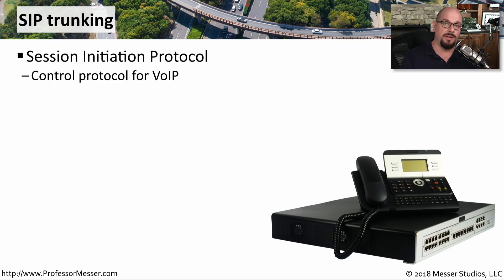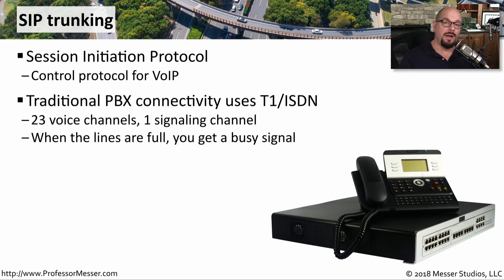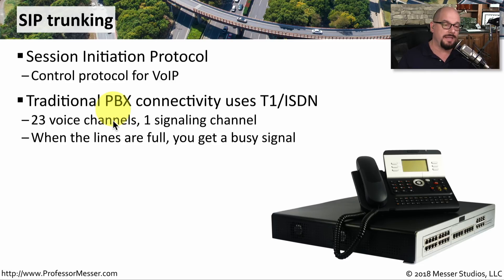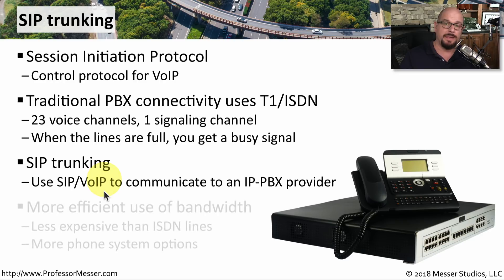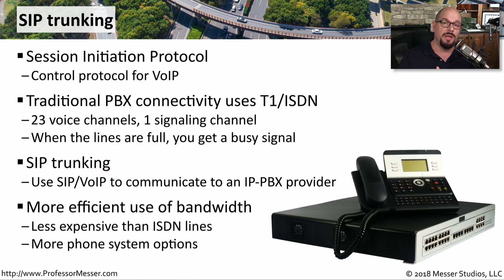SIP is the Session Initiation Protocol — one of the more popular control protocols used for Voice over IP communication. With a traditional business PBX, or Private Branch Exchange, you would bring in T1 lines or ISDN connections for voice channels, plus a separate wire going to every desk for each telephone. When you fill up all 23 voice channels, callers would get a busy signal. With SIP trunking, you use a Voice over IP connection to an IP PBX provider, which is a much more efficient use of bandwidth. You can control how much compression is used on VoIP calls, supporting much more capacity than a traditional ISDN or T1 connection. It's less expensive than ISDN lines, and you have many more options available on your digital Voice over IP communication.